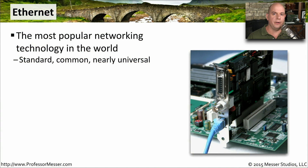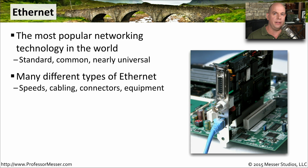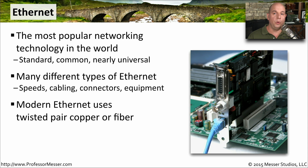If you're talking about a wired network, then you're probably talking about Ethernet. It is the most popular network topology in the world. When you walk into a building, a store, or an office, they are absolutely going to be running an Ethernet network. There are many different kinds of Ethernet — different cabling, different speeds, and different topology types. Although some older Ethernet networks ran over coax, these days you see almost every Ethernet network running over copper or fiber connections.